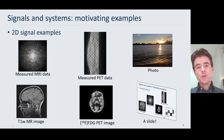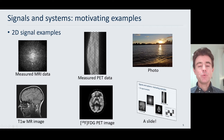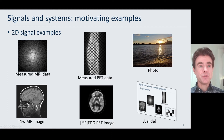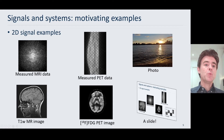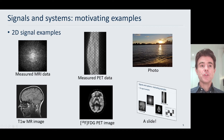Moving on from 1D to 2D, again medical imaging here. We have an example of case-based data in magnetic resonance imaging, which we can use to reconstruct MR images, and this is an example of a T1-weighted MR image. Both of those are examples of two-dimensional signals.